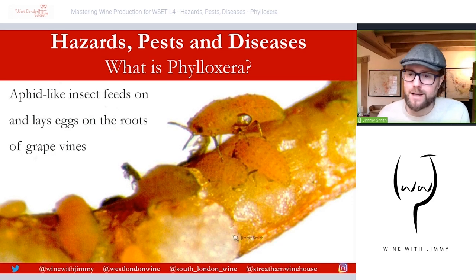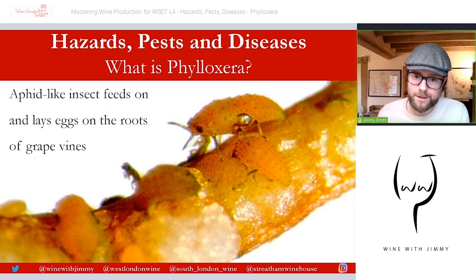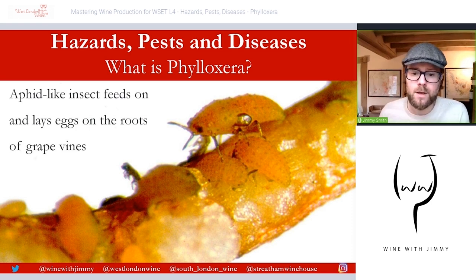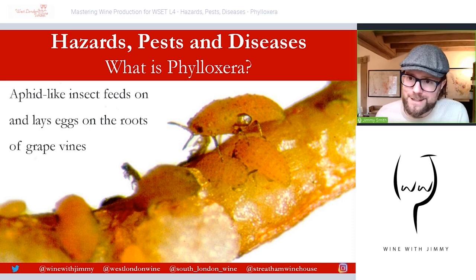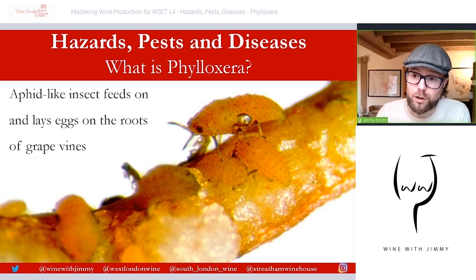Now let's talk about exactly what phylloxera is, what it does, and how we can manage against it. Phylloxera is an aphid-like insect that feeds on and lays eggs on the roots of grapevines — specifically Vitis vinifera. These almost microscopic, pale yellowy-orange sap-sucking insects, related to aphids, feed on the roots and also the leaves of grapevines. The specific phylloxera genetic strain determines exactly what it does, but they utilise the root as something to feed on — and it's the damage they do to it which really causes the problem.